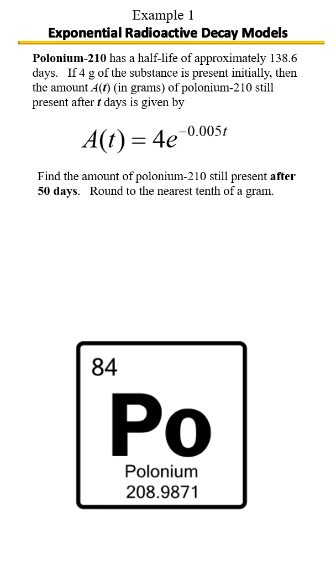Polonium-210 has a half-life of approximately 138.6 days. If 4 grams of the substance is present initially, then the amount A(t) in grams of polonium-210 still present after t days is given by the following equation. Find the amount of polonium-210 still present after 50 days. Round to the nearest tenth of a gram.